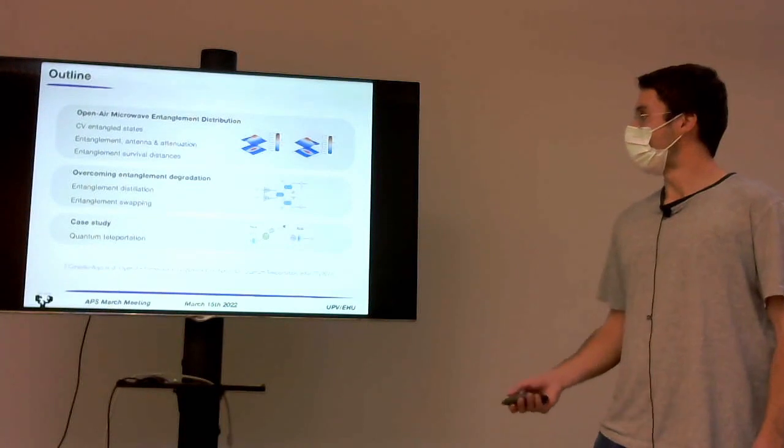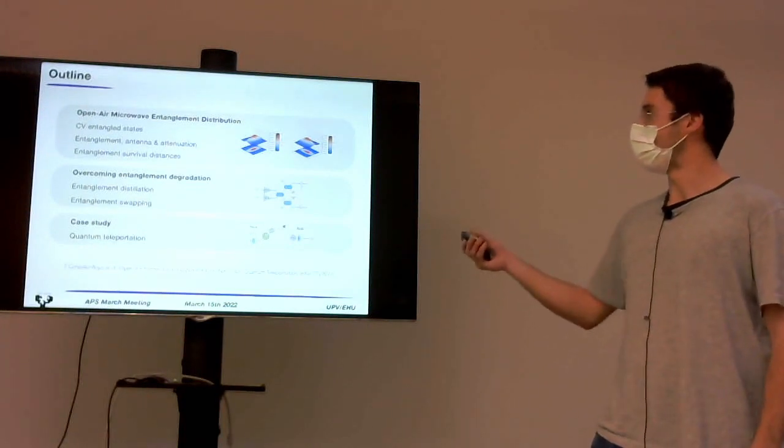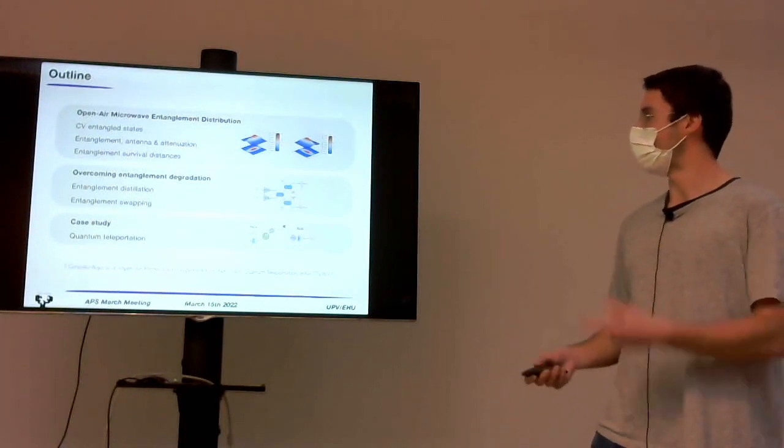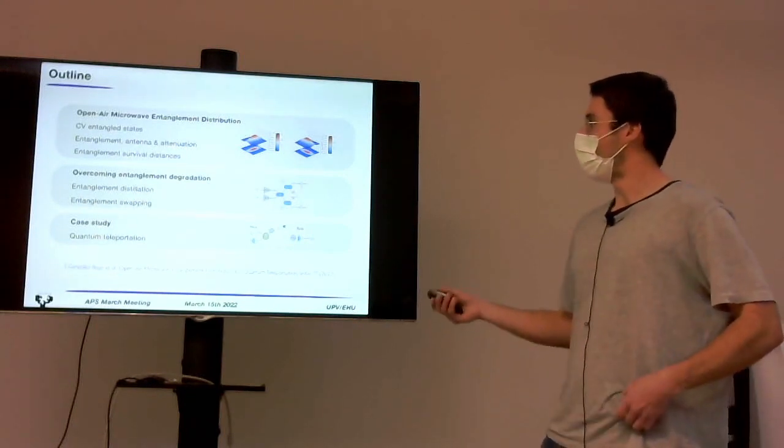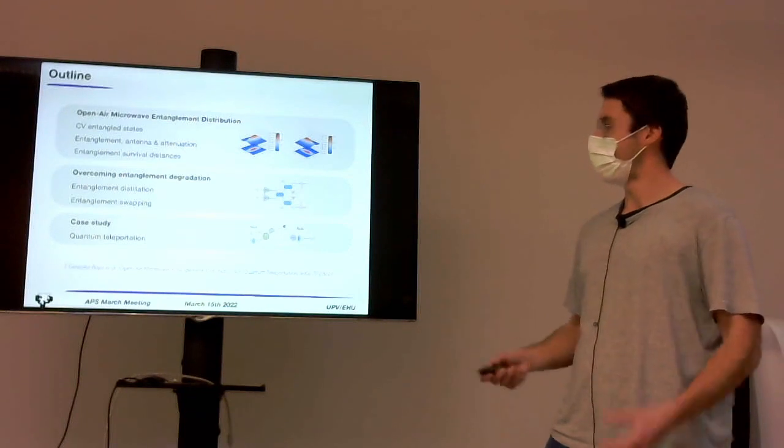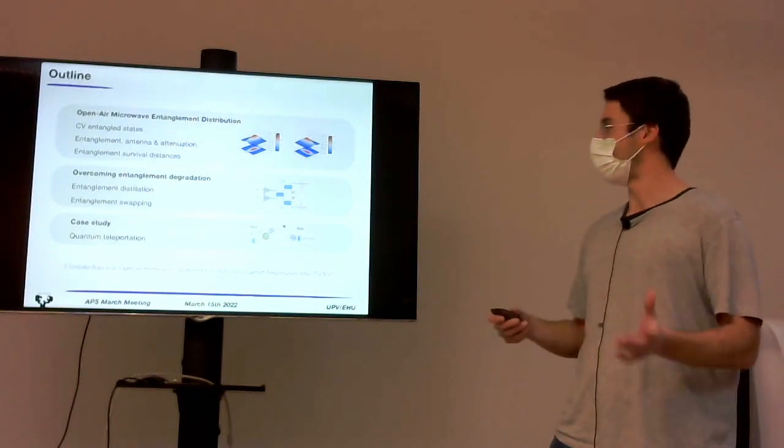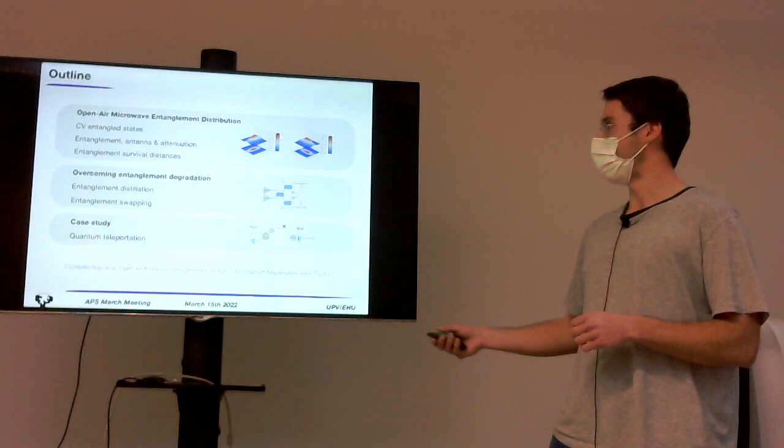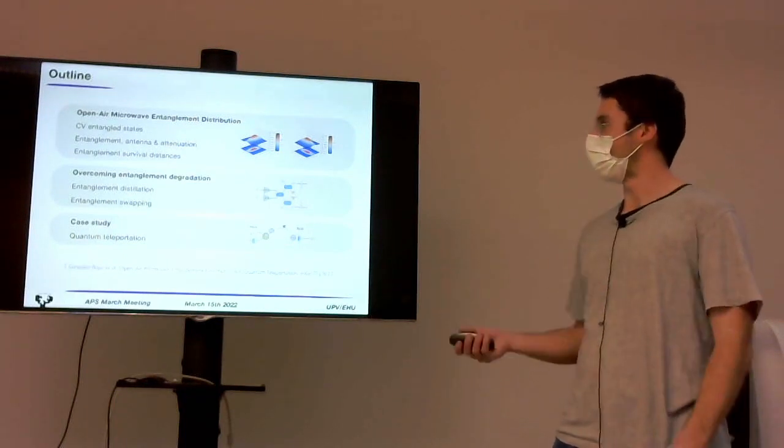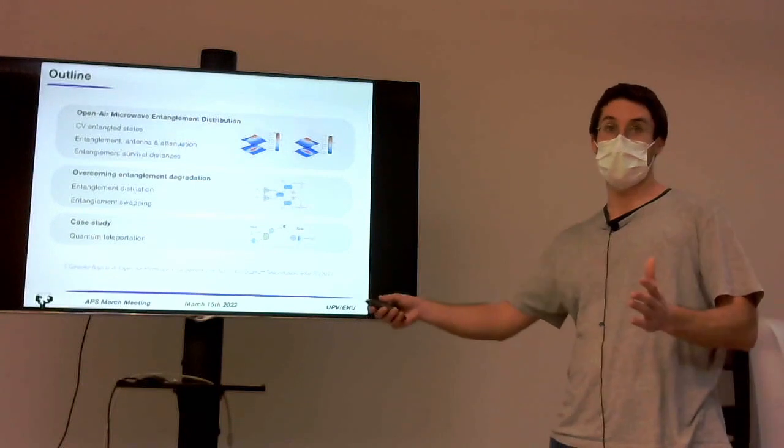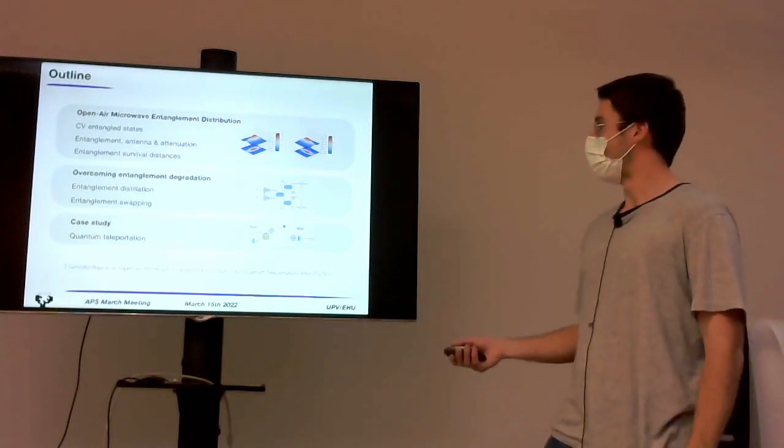So, the outline of the talk is going to be about entanglement distribution with microwaves in open-air. We will see what entangled states in continuous variables are used, how those states behave after you combine the effects of an antenna that sends them to open-air and attenuation in that environment, and we will see some entanglement survival distances,